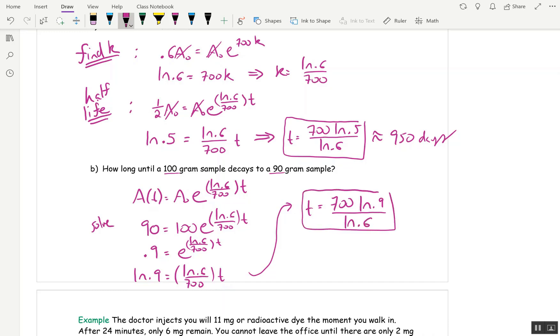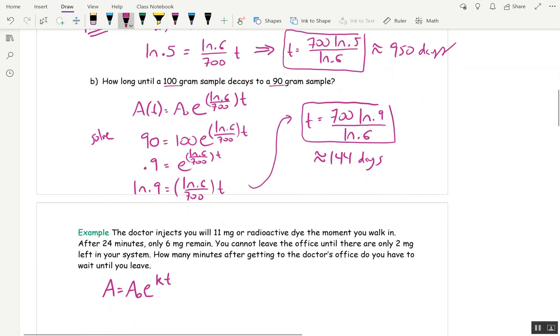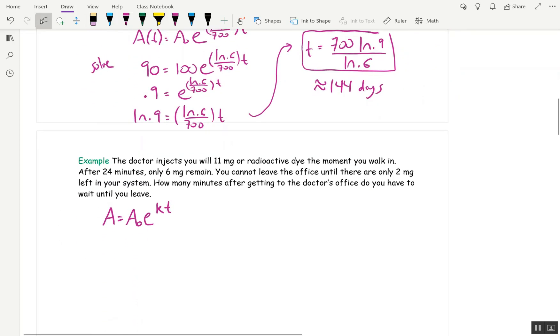So t is 700 times ln of 0.9 divided by ln of 0.6. Again, for me, that's a good answer. But you're going to have to round maybe to the nearest day. And I did that on Desmos already, and I got about 144 days. Okay.